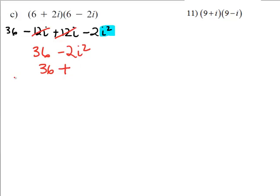Well, I'm not going to do that yet. I'm going to do one more step. 36 minus 2 times negative 1, because that's i squared. And once you deal with negative and a negative, you have 36 plus 2, or 38.